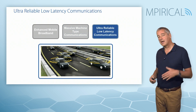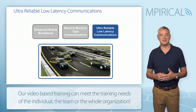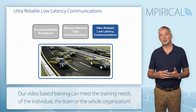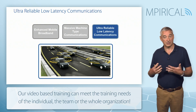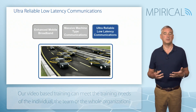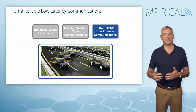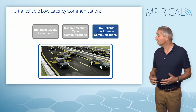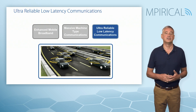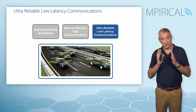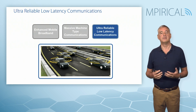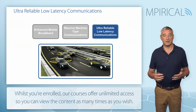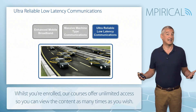Finally, we have ultra-reliable and low latency communications, which we can break down into two components. First, communications that require ultra reliability — for example, we often refer to five or six nines: 99.9999% reliable. Second, low latency communications — requiring a very short period of time for information to pass across the network. Examples include autonomous vehicles and tactile Internet.